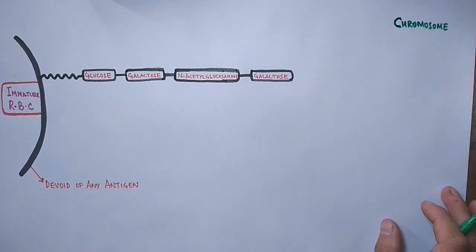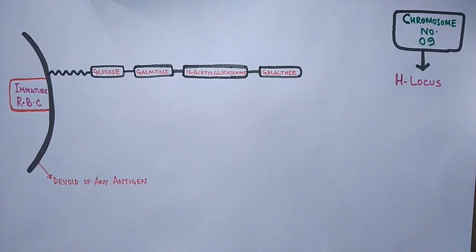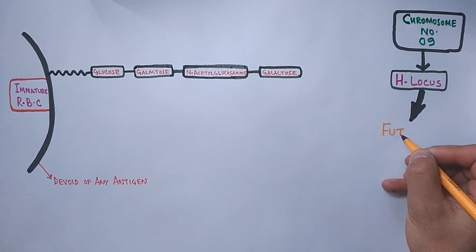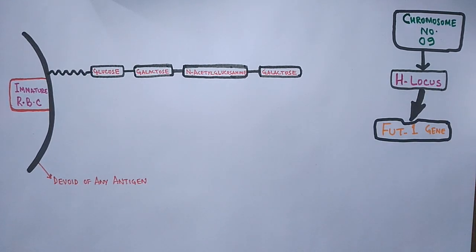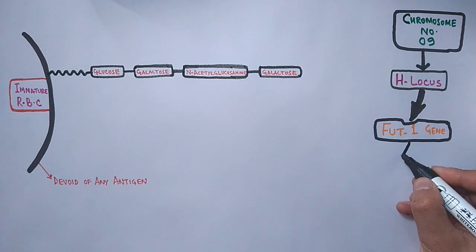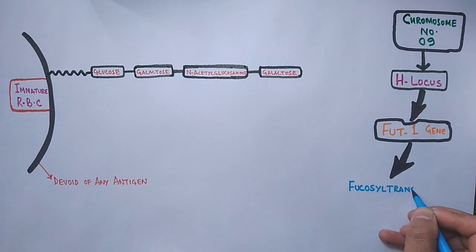After that, chromosome number 19 has got H locus, that's the H antigen locus, which consists of FUT1 gene, H antigen gene, and this FUT1 gene codes for Fucosyltransferase enzyme.